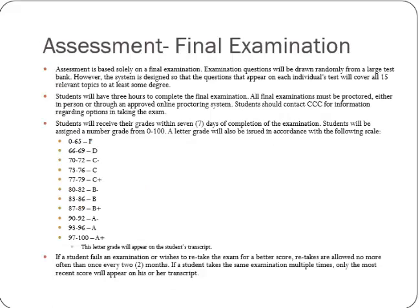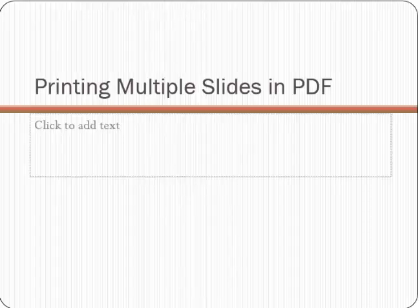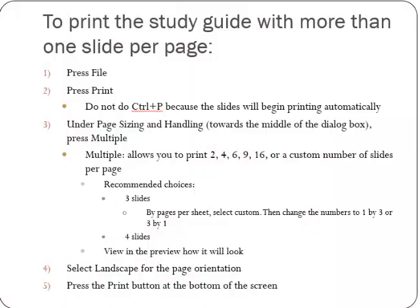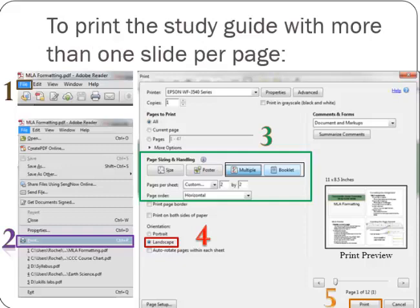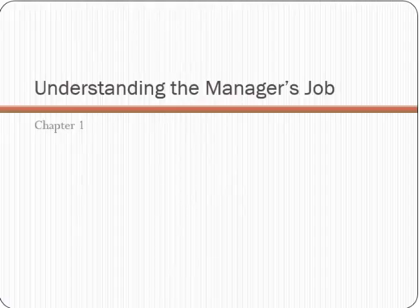There will be a final examination at the end of this course, graded on a standard 1 to 100 scale. There is a textbook that's recommended, and you can see all this in the study guide that you have access to. If you want to print out the study guide, it's about 150 slides long. There is a guide to printing it out in only about one quarter of that — under 40 pages. Let's go ahead and look at chapter one.